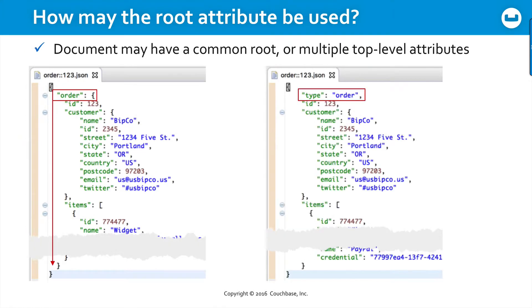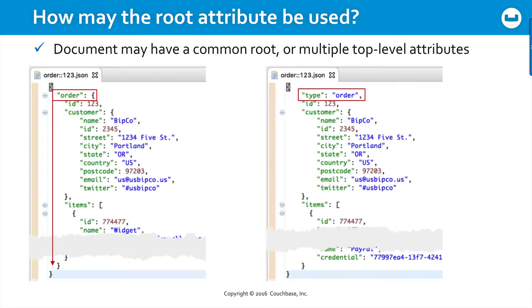First, let's consider whether and how you might use a root attribute in your document. On the left, you see a JSON document — order123 — and the entire document is a single object. It has one attribute called order, and all other attributes of the document are contained within it.